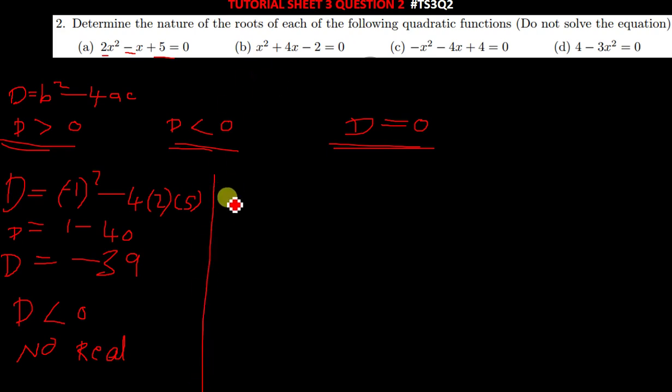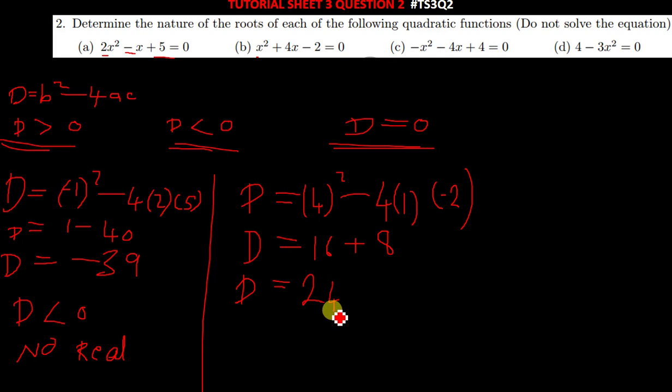So we quickly move on to b. You get your a, b, and c, you place them there. D is equal to b squared. My b squared will be 4 squared minus 4. My a is 1, my c is negative 2. Your D is going to be equal to 16 minus, so negative 4 times negative 2 gives positive 8. So D is equal to 24.